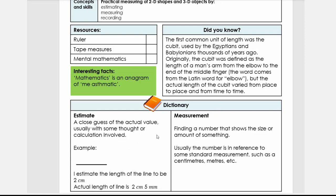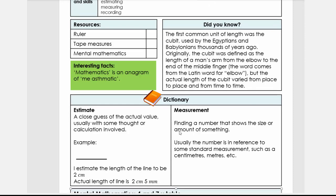And then your dictionary is on estimation and measurement. Remember the very important part of estimation is every time after we estimate, we need to measure and compare, because that teaches us what measuring or measurement is all about. That teaches us what is more or less a centimeter, what's more or less a meter, what is a kilometer.